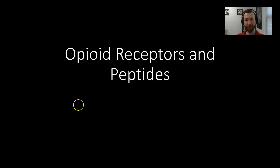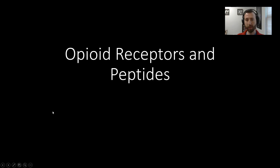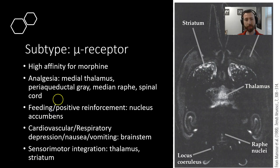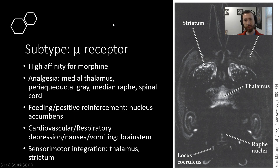Hello everyone, and welcome to our second mini-lecture on opioids. Today we're going to be talking about the opioid receptors and peptides. Getting right into it, the first one we're talking about is the mu-opioid receptor.